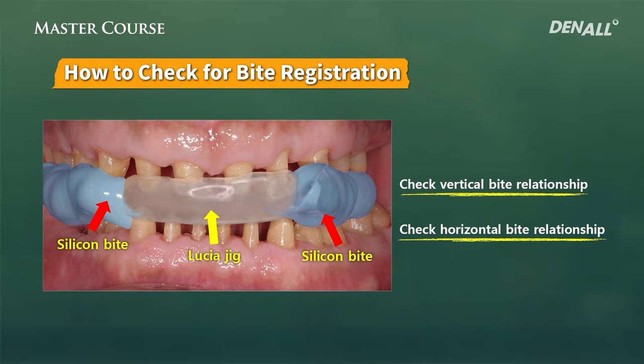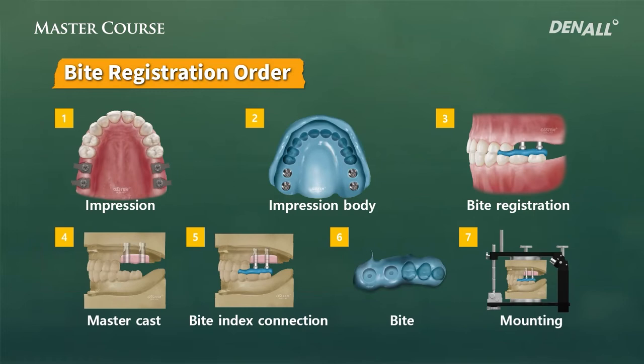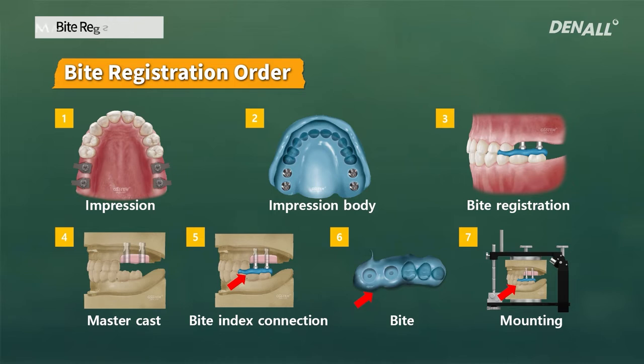In the master course, you will learn more about this with hands-on practice. This is using a bite index. You can see that in the upper and lower area where they meet in the middle, the bite material is not present. So only natural teeth need to be used for bite registration — that is the way to reduce error and achieve more accurate mounting.